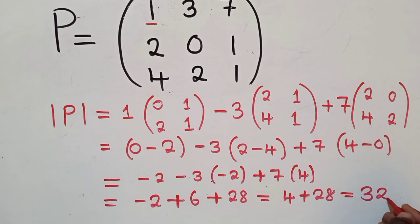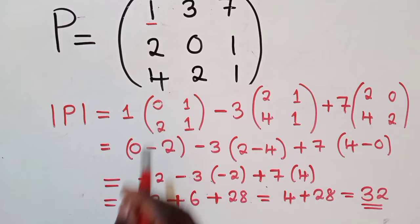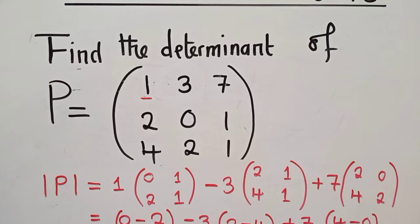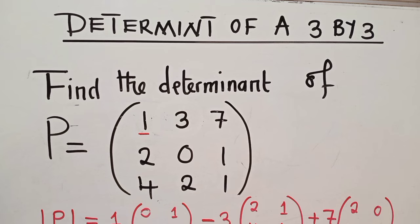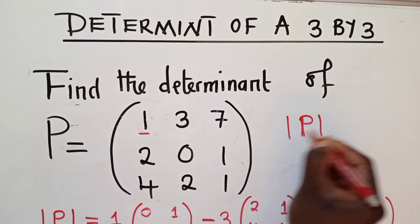So the determinant of this 3 by 3 matrix is 32. So that's it. Hopefully, you've benefited. Remember to share the video. Let me just write the determinant here so that we get to understand. So the determinant here is 32.